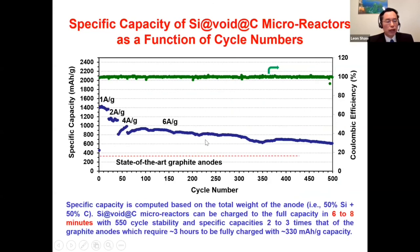At 6 mA per gram current density, over 500 cycles we eventually retain 600 mAh per gram capacity — approximately 100% higher than graphite anode capacity.